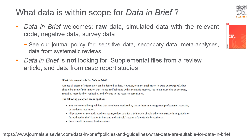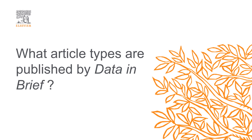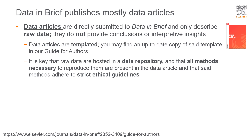So how do we describe and communicate raw data? We use data articles, among other article types that Data in Brief publishes. The main article type is the data article. Data articles only describe data — it is key that your data article does not provide conclusions or interpretations based on data analysis. Data articles must also provide the necessary information to access the raw data they describe, and all protocols and methods must adhere to strict ethical guidelines. Please note that data articles are templated and it is mandatory to use the templates provided in our Guide for Authors.